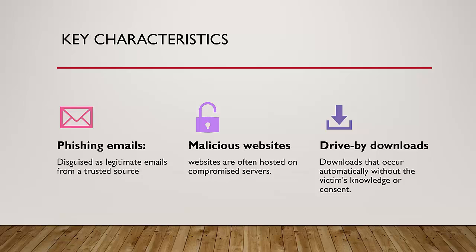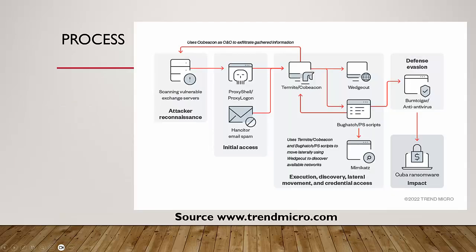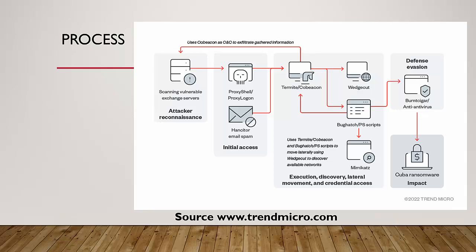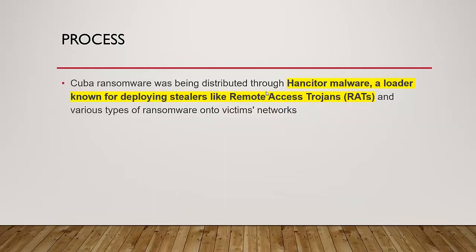Using a Trend Micro reference to explain how Cuba targets systems: first, it scans for vulnerable servers; then uses ProxyShell and Hancitor for initial access; once inside, it gains access to the system through Mimikatz for further lateral movement, ultimately encrypting files. If you have antivirus solutions in place, you can detect the attack at this stage. Ransomware also terminates active Windows services and deactivates APIs to help maintain persistent access to the systems.